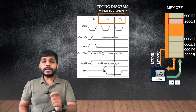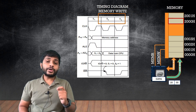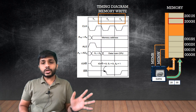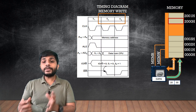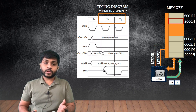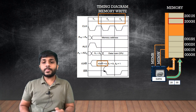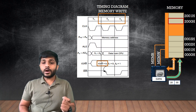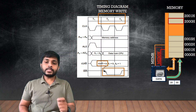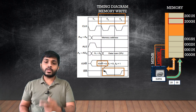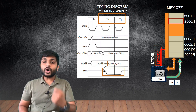The next two T-states in the memory write machine cycle timing diagram are T2 and T3. To write the data, the processor has to generate the memory write control signal. The microprocessor does not have a dedicated memory write signal — it generates it by combining IO/M̄ and WR̄. The value of IO/M̄ will be low and the value of WR̄ will also be low. When these two signals are combined, the memory write signal is generated. You can see on the screen that the processor has sent the memory write signal to the memory.